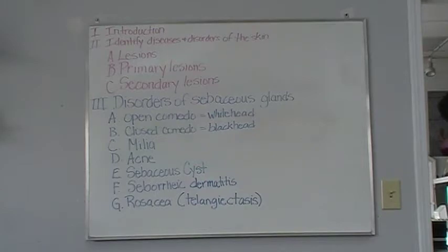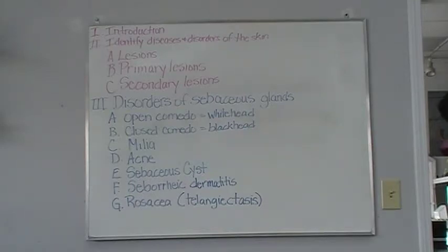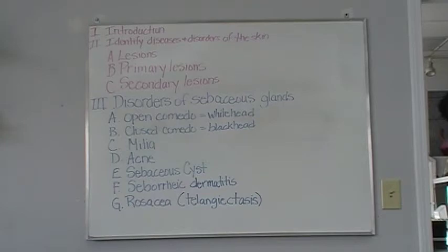A fissure is a crack in skin penetrating into the dermis. A keloid is a thick scar resulting from excessive growth of fibrous tissue; keloids will form along any type of scar for people susceptible to them. Scale is a thin, dry, or oily plate of epidermal flakes, such as excessive dandruff. A scar or cicatrix is a slightly raised mark on the skin formed after an injury or lesion of the skin has healed. An ulcer is an open lesion on the skin or a mucous membrane accompanied by loss of skin depth and possibly weeping of fluids or pus. This requires a medical referral, particularly in clients with underlying medical conditions such as diabetes.